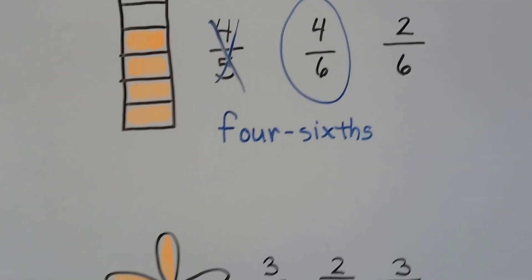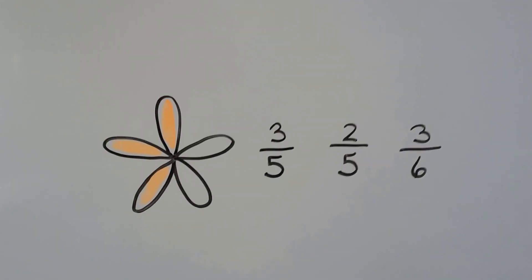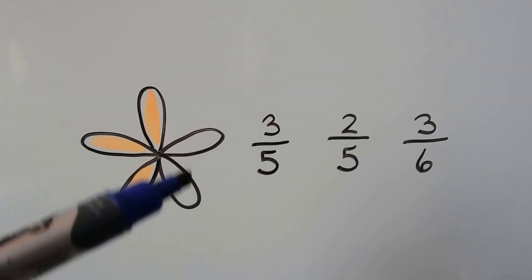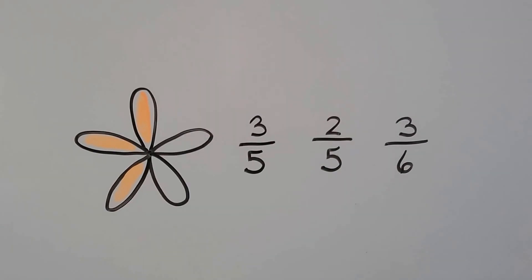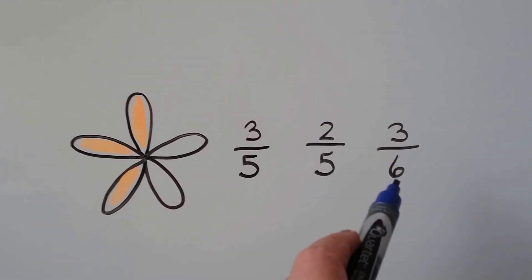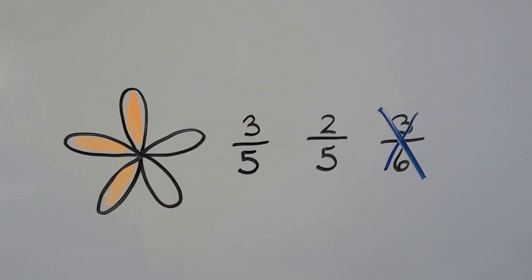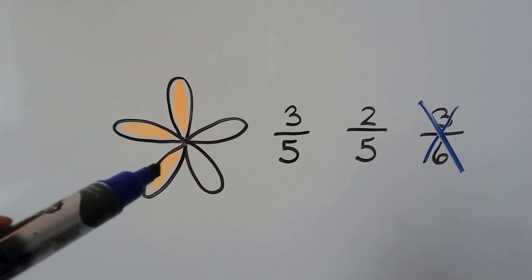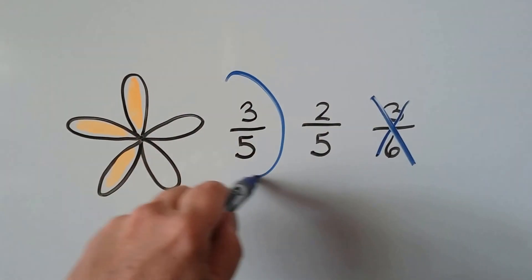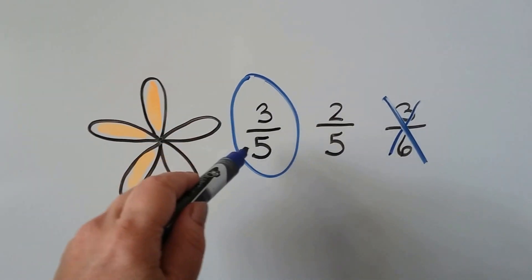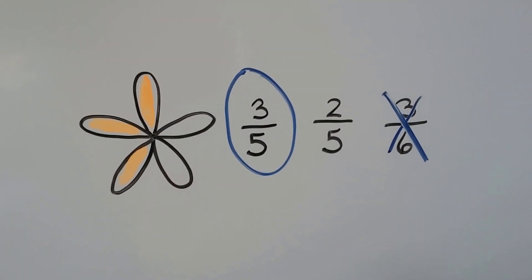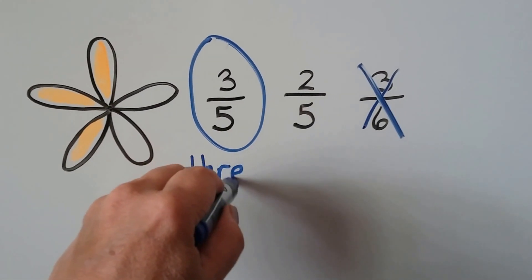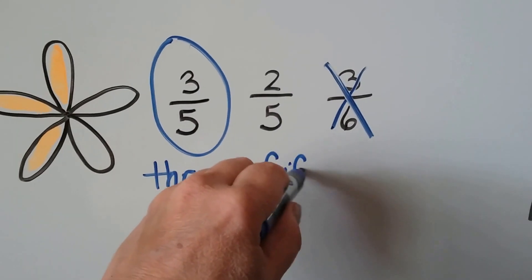With the THS at the end. Let's try this one. First, let's count the equal parts: one, two, three, four, five. There's five equal parts, so we know right away that can't be the answer because that's got a six for the equal parts. So it's one of these. How many are shaded? One, two, three. So we know it's this one — three of the parts are shaded and there's five equal parts. This fraction is three fifths.